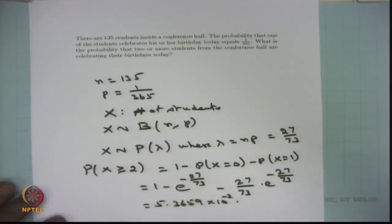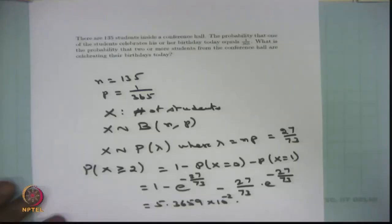This is a straightforward problem, and many more variations can be created from the same setup. Since n is large and p is almost 0, we apply the Poisson approximation to the binomial distribution.